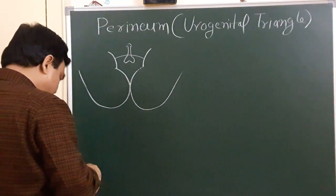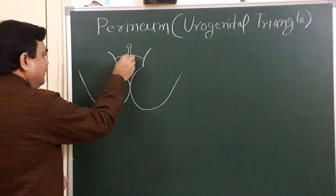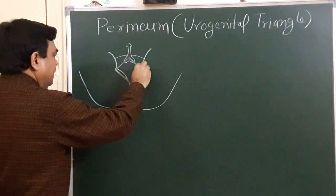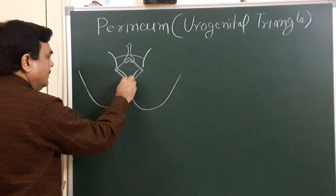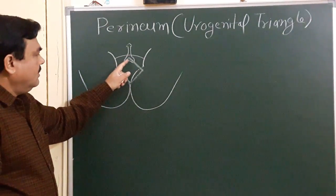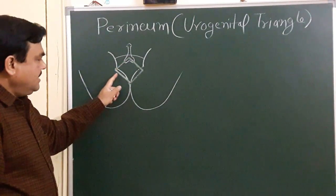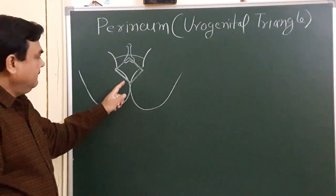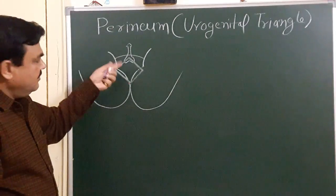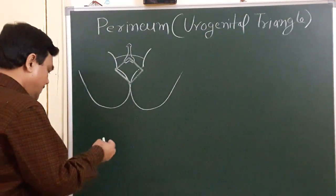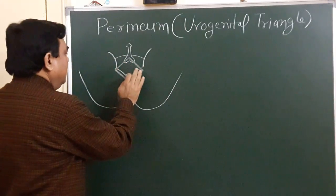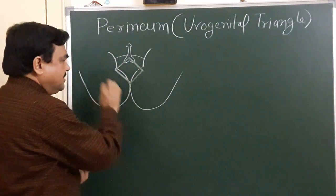In this diagram, you can see the boundary of the perineum. Anteriorly it is bounded by the scrotum; on each side, the medial thigh; and posteriorly the buttocks. If you remove these structures, you will find the deeper boundary of this region.